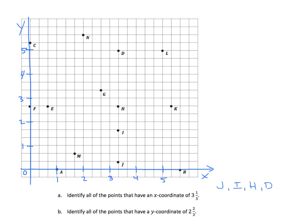Now we're going to part b. Identify all the points that have a y-coordinate of 2 and 2-thirds. Go to 2 and then up 2 more of these intervals — 2 and 1-third, 2 and 2-thirds. We'll look along this horizontal line, which is parallel to the x-axis. I'm referring to that for future lessons. The answers are F, E, H, and K.